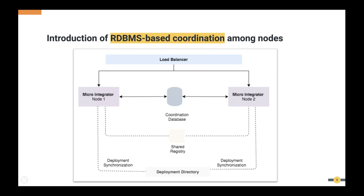Because all communication happens through the database, the database becomes a single point of failure. If the database connection is lost, every node stops performing coordinated tasks and waits until the connection is retrieved. Only coordinated tasks will stop — other services continue to run. The minimum HA deployment of an MI cluster is two nodes with this approach because there are no inter-node communications through the network, so we don't have the concept of quorums.